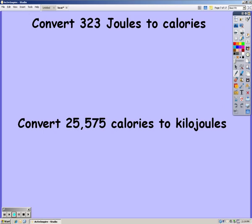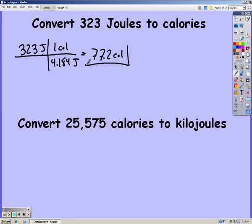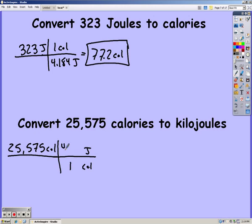Pause the iPod and try these two on your own. Okay, so 323 joules converted to calories should give you 77.2 calories. And then converting 25,575 calories to kilojoules, it's going to be one extra step. Convert it to joules, and then remember that there's 1,000 joules and a kilojoule. And so you get 107 kilojoules.